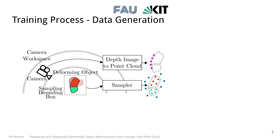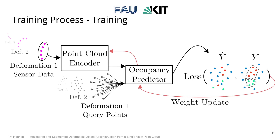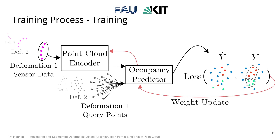The sensor data and the query points are jointly normalized according to only the sensor data, because only that would be known at inference time. After normalization, the sensor data lies within the minus-one to one cube in 3D, but the occupancy query points may lie outside of that cube. The training loop is quite simple: the point cloud encoder and the occupancy predictor are trained end-to-end. The encoded sensor data and query points are passed to the occupancy predictor, which labels the query points. The labeled points are compared with ground truth from the sampler to compute the loss and update the whole system. As the system learns to better classify each point, the decision boundaries between classes slowly build up our 3D object.